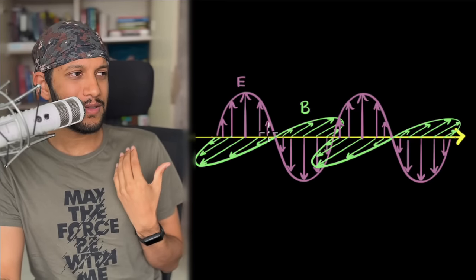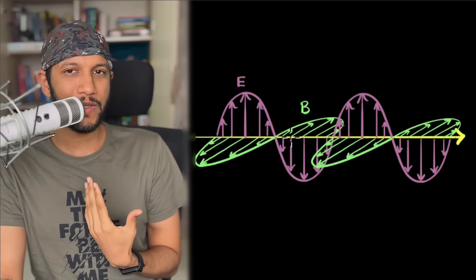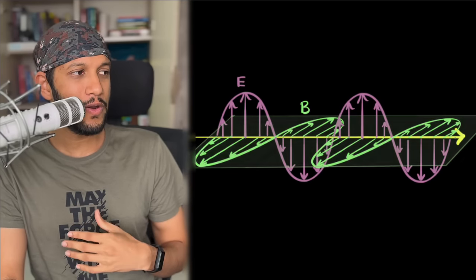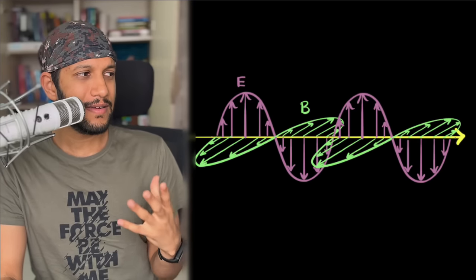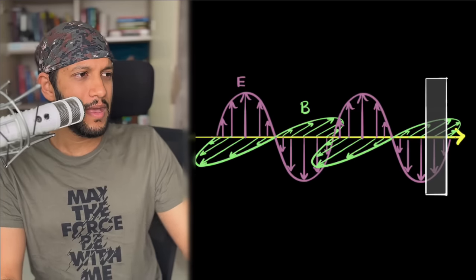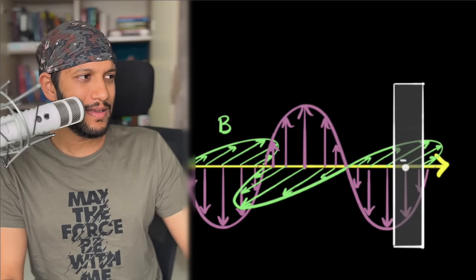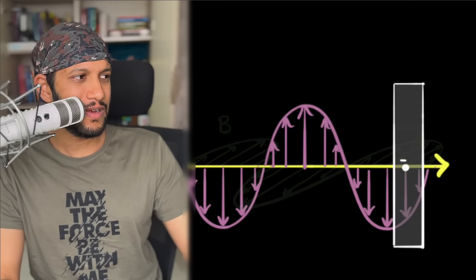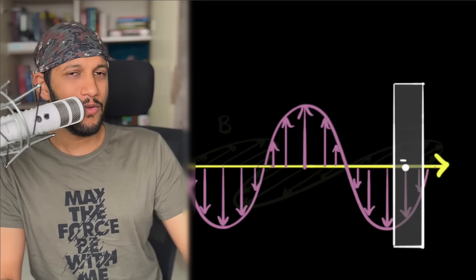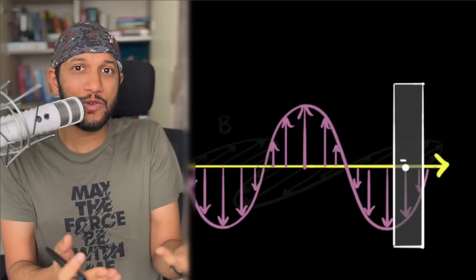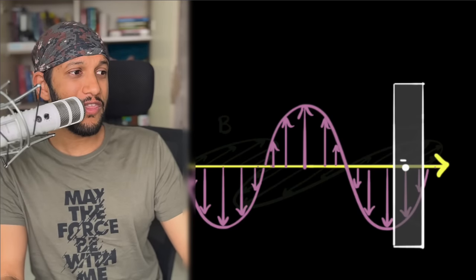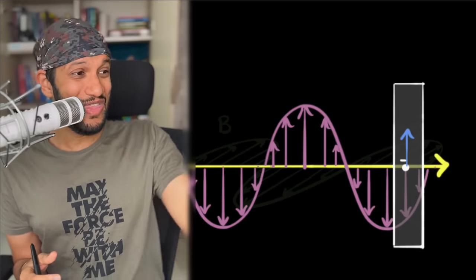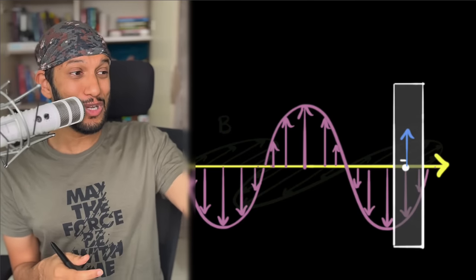Feynman says: consider an electromagnetic wave traveling to the right. It has oscillating electric and magnetic fields, perpendicular to each other and to the direction of light — the electric field in the vertical plane and the magnetic field in the horizontal plane. Consider it being incident on a thin foil. Imagine a tiny electron in it. The electromagnetic field falls on that electron. Focusing on the electric field: charged particles experience a force due to the electric field, and since the electron is negatively charged, it experiences a force in the opposite direction of the electric field.